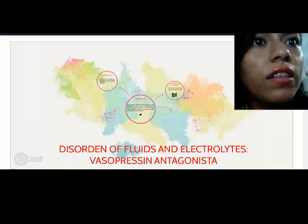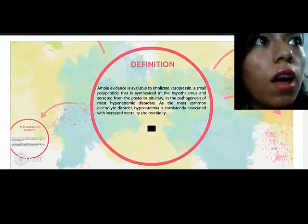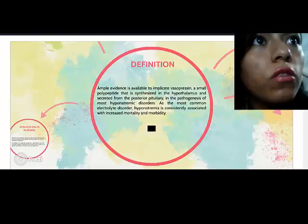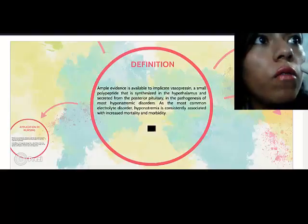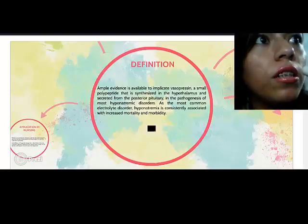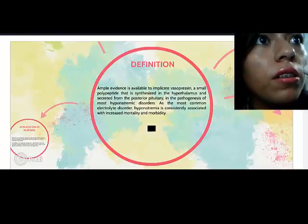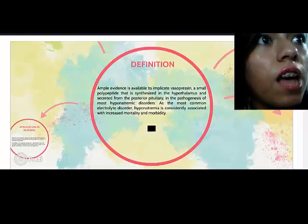Disorder of fluid and electrolyte: vasopressin antagonist. In definition, applying vasopressin and its properties in the hypothalamus and the secretive front, the posterior, in the context of hypernatremic disorder. Hypernatremia is considered associated with injury, mortality, and morbidity.